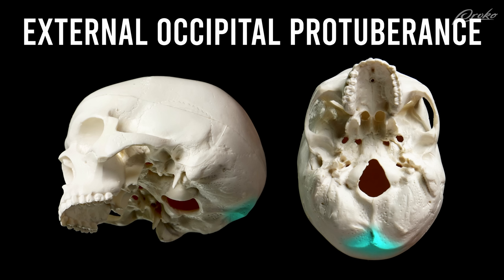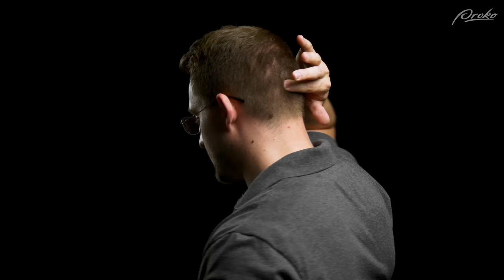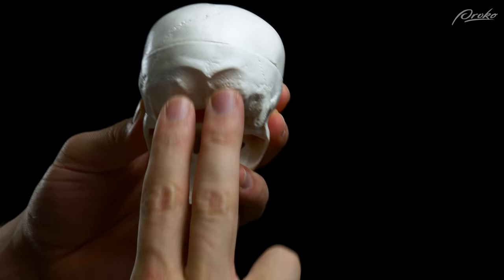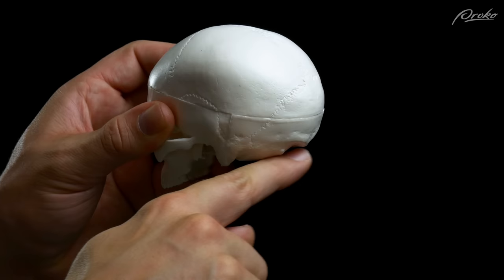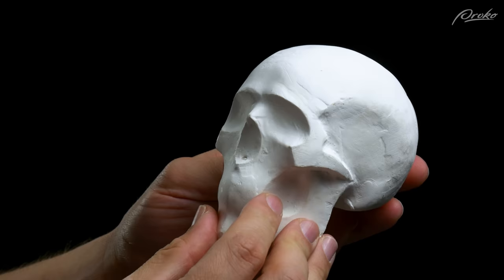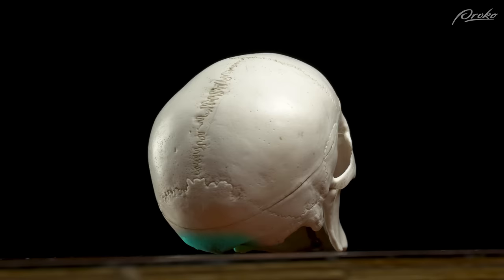Number eight: the external occipital protuberance of the occipital bone. Moving to the back of the head, you can feel this on your own skull by feeling the back of the skull where the skull ends — that bump is the external occipital protuberance. This bump is where the muscles of the back of the neck attach to the skull. It also gives us an indication of where the back bottom plane of the cranial mass begins. Sometimes when skulls are placed on a flat surface, the bottom of the mental protuberance and the angle of the jaw will align with the back of the skull at the external occipital protuberance, so that all three of these features touch the table at the same time.